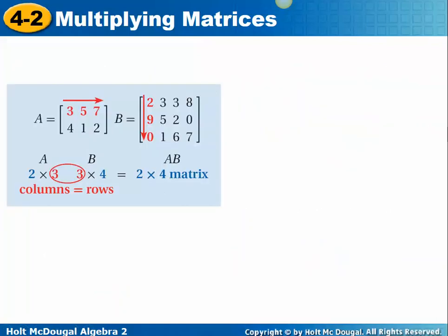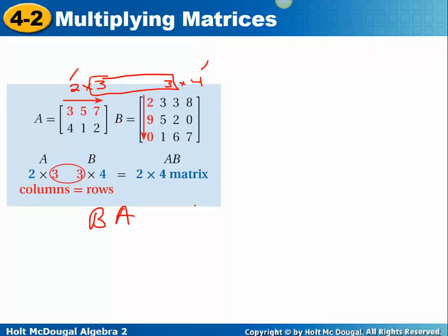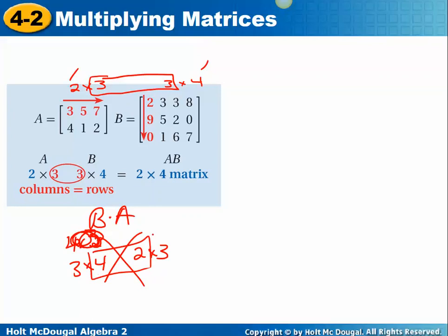Here's an example with different matrices: matrix A is a 2 by 3 and matrix B is a 3 by 4. These two inner parts match — the number of columns of the first matches the rows of the second — and you would get a 2 by 4 matrix result. You would not be able to multiply B times A because B is 3 by 4 and A is 2 by 3, and those inner dimensions do not match. So you could not multiply these in the other order.